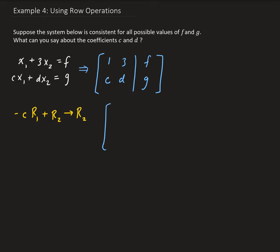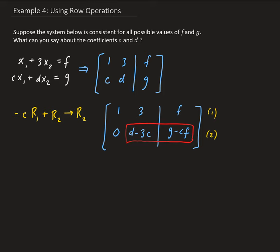So we end up getting 1, 3, f in the first row. This will be 0, and then we have d minus 3c, and then g minus cf. Now we need to carefully analyze this equation. Looking at equation 2, we have (d minus 3c) times x2 equals g minus cf.